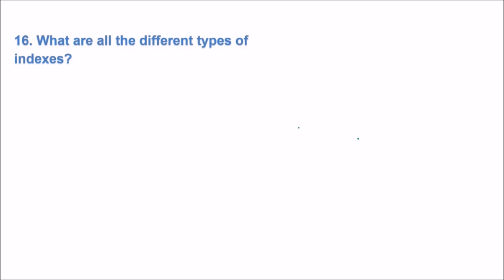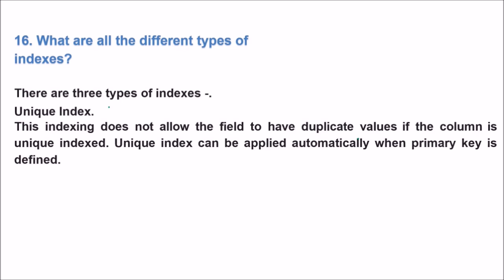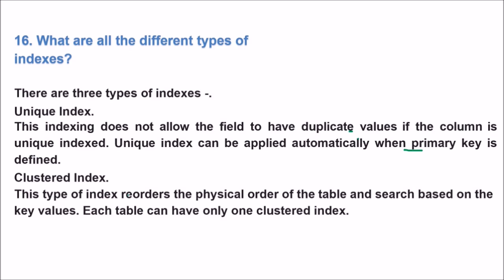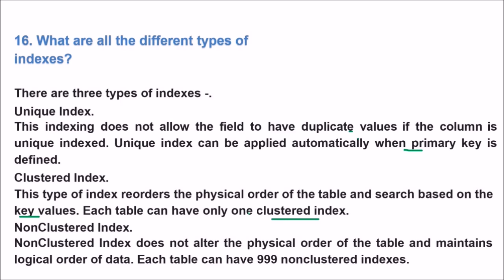What are the different types of indexes? There are three types. First, unique index — this does not allow the field to have duplicate values, and it is applied automatically when a primary key is defined. Second, clustered index — this reorders the physical order of the table and searches are based on key values; each table can have only one clustered index. Third, non-clustered index — this does not alter the physical order of the table and maintains only the logical order; each table can have many non-clustered indexes.